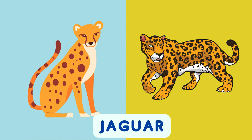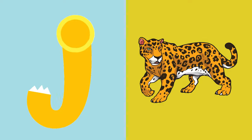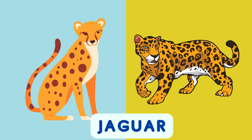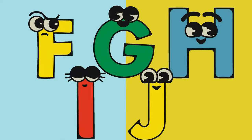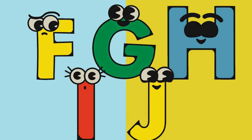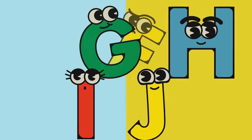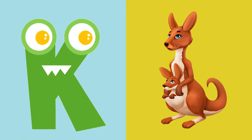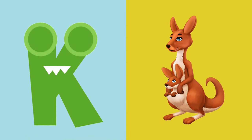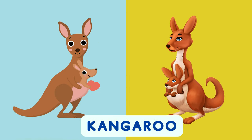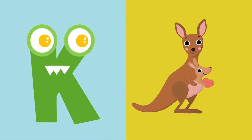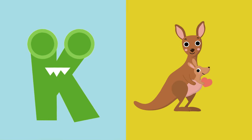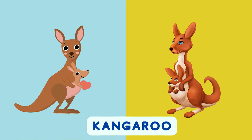J is for Jaguar. J, J, J. K is for Kangaroo. K, K, K.